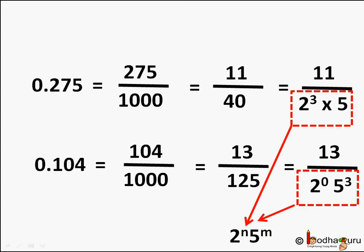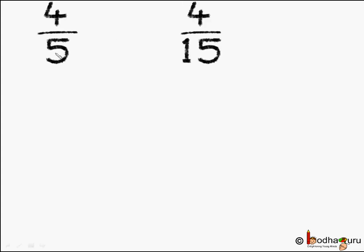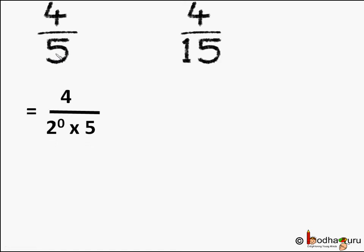Let us apply this to 4 by 5 and 4 by 15 to find the difference. In 4 by 5, the denominator 5 can be written as 1 into 5, which equals 2 to the power 0 into 5, because 2 to the power 0 is 1. So it is of the form 2 to the power n into 5 to the power m, and therefore the result of 4 by 5 will be a terminating decimal number: 0.8.